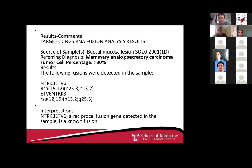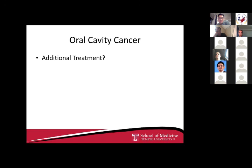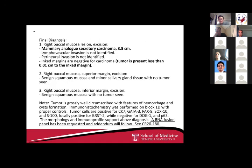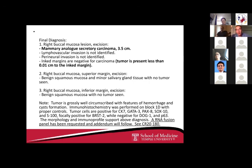Next-generation sequencing confirmed the ETV6-NTRK3 fusion gene, which is pathognomonic for mammary analog secretory carcinoma. The margins were close — not going to pretend otherwise. In the buccal fat you're just transecting fat indiscriminately, and fat doesn't survive histologic processing. You can try to take more fat but if you get a close margin in one place you'll get one elsewhere. The tumor grew with pushing margins, contributing to the close margin result.